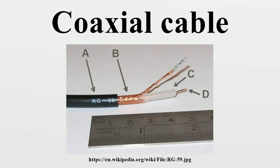Normally the shield is kept at ground potential and a voltage is applied to the center conductor to carry electrical signals. The advantage of coaxial design is that electric and magnetic fields are confined to the dielectric with little leakage outside the shield. Conversely, electric and magnetic fields outside the cable are largely kept from causing interference to signals inside the cable. Larger diameter cables and cables with multiple shields have less leakage.